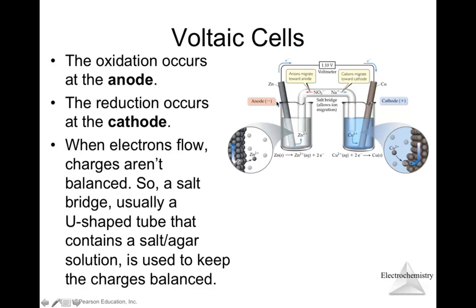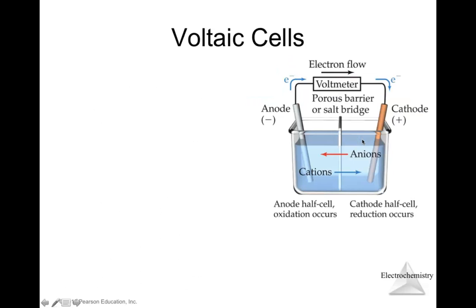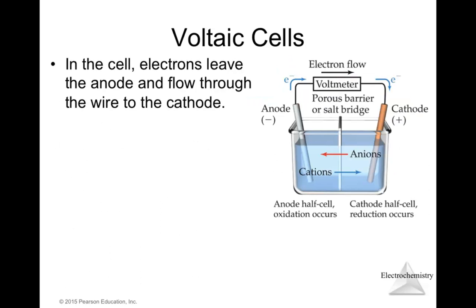The anode is always on the left and the cathode is always on the right. At the anode, oxidation occurs; at the cathode, reduction occurs. The solution contains the same ion as the solid electrode. The zinc electrode is the anode where oxidation occurs; electrons are transferred from zinc to copper, and copper ions in solution receive those electrons. In the cell, electrons leave the anode and flow through the wire to the cathode. The salt bridge allows cations and anions to move back and forth to neutralize the charges created during oxidation and reduction.